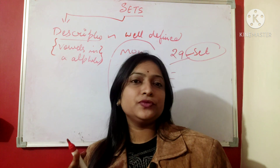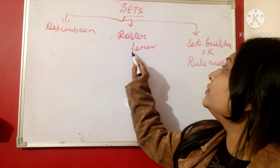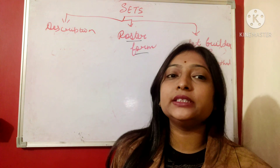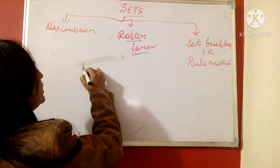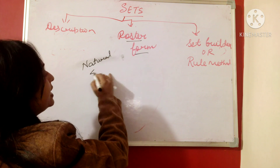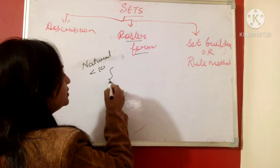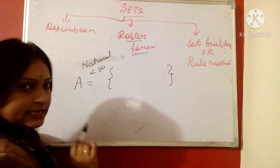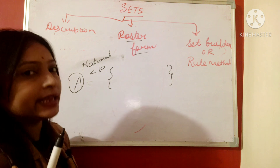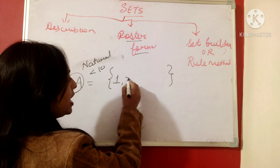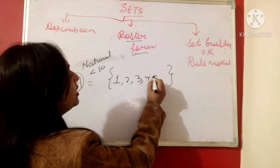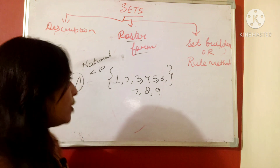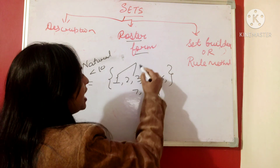After the description method, we have the roster form. In roster form we represent the elements directly. For example, natural numbers less than 10 — the set should be in curly braces, and the name of the set is written in a capital letter. So set A equals {1, 2, 3, 4, 5, 6, 7, 8, 9}. This is the roster form, and these are called the elements.